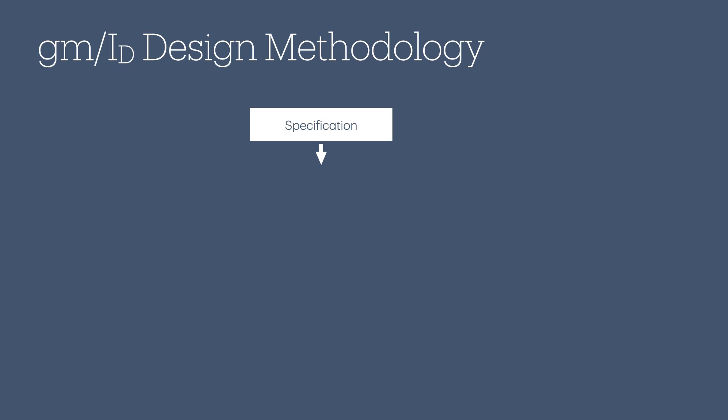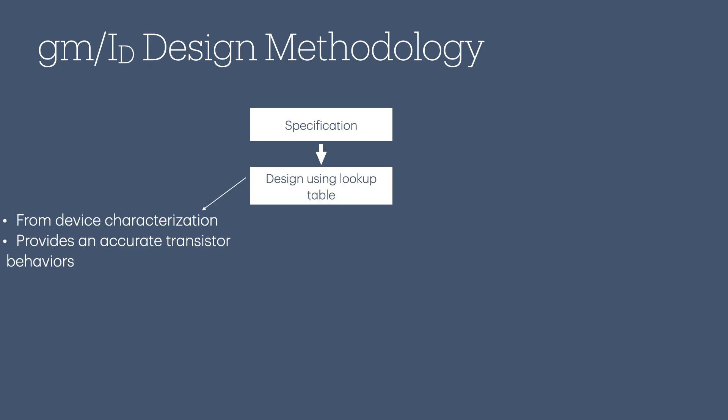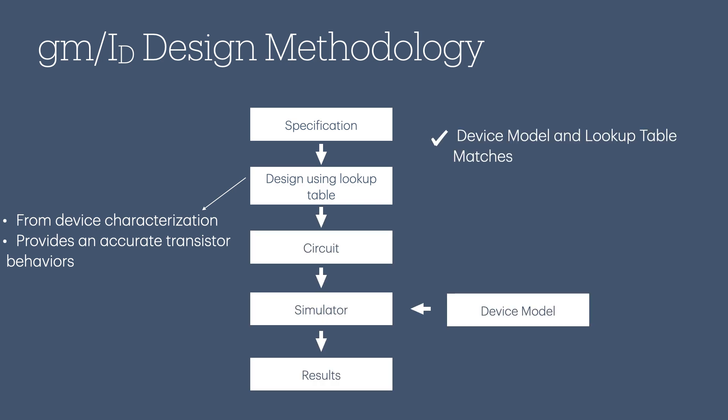To solve the issue we just described, the GM over ID design methodology was developed. In this design methodology, instead of using the square law, we design using a lookup table. This lookup table provides a very accurate behavior of the transistor device. In this methodology, our simulation results are very close to what we have designed, primarily because all the second-order effects, such as CLM and DIBL, are captured in the lookup table.